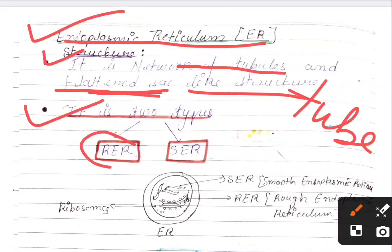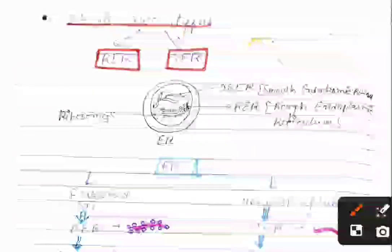There are two types of ER: RER (Rough Endoplasmic Reticulum) and SER (Smooth Endoplasmic Reticulum).